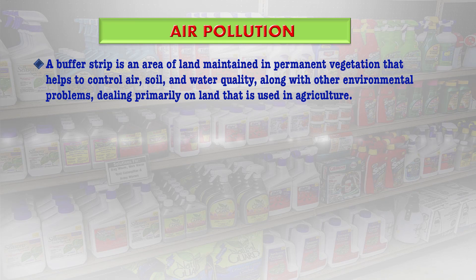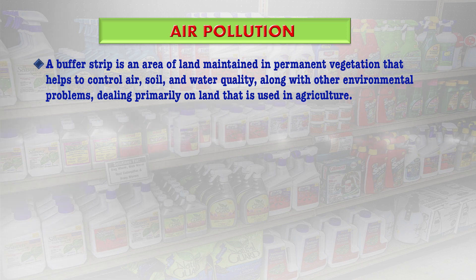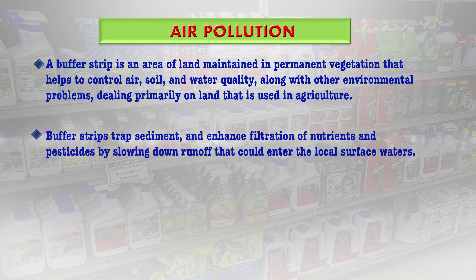A buffer strip should be maintained — it is an area of land maintained in permanent vegetation that helps control air, soil and water quality along with other environmental problems, primarily on agriculturally used land. Buffer strips trap sediment and enhance filtration of nutrients and pesticides by slowing down runoff that could enter local surface waters.